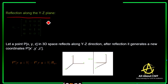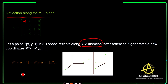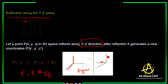For reflection along the YZ plane, Y and Z should remain positive and the X coordinate becomes negative. The transformation matrix is: [-1, 0, 0, 0, 1, 0, 0, 0, 1, 0]. If you take point P(X, Y, Z) in 3D space and reflect along YZ direction, it generates new coordinates P'(X', Y', Z'). So P' equals P into the reflection along YZ. YZ remains the same; only the X axis is reflected — coming to the negative axis.